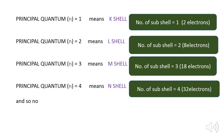When n equals three, we are talking about the M shell; the number of subshells is three, and the maximum number of electrons is 18. When n equals four, we are talking about the N shell; the number of subshells is four, and the maximum number of electrons is 32. Note that the number of shells equals the number of subshells — for the first shell the subshells is one, for the second shell the subshells are two, and the maximum number of electrons must be equal accordingly.